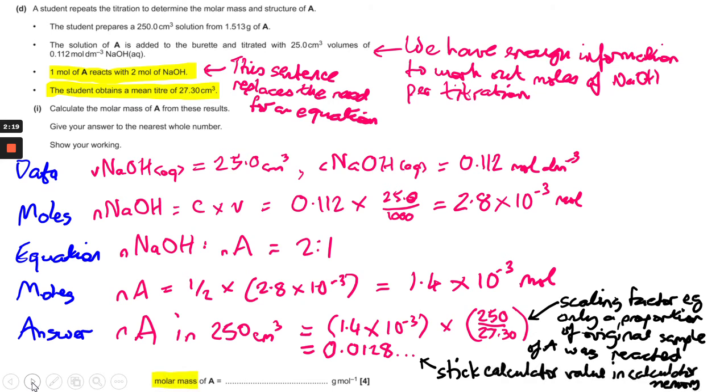So what you do is you put the calculator value into the calculator memory and the question tells you to work out the molar mass of A. So remembering the conversion for molar mass, moles and mass, the molar mass is going to be the mass over the moles.